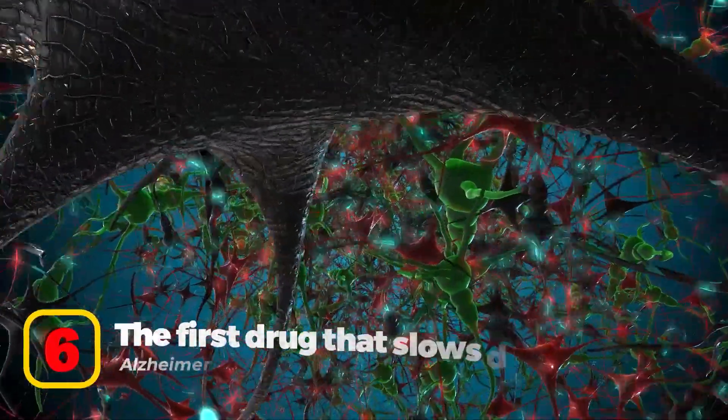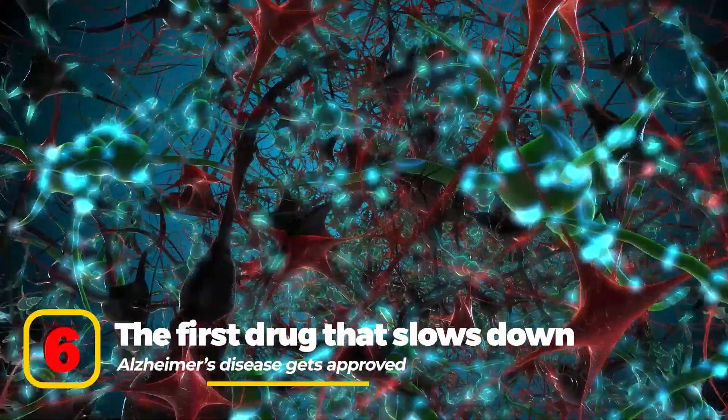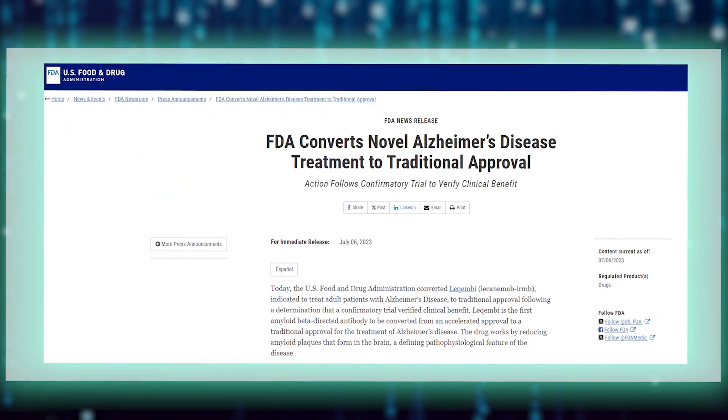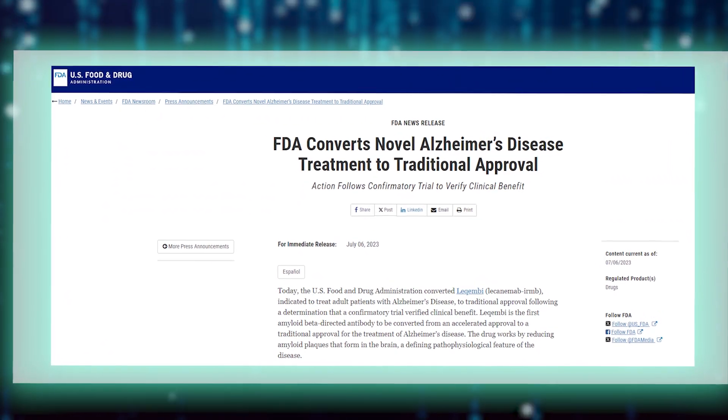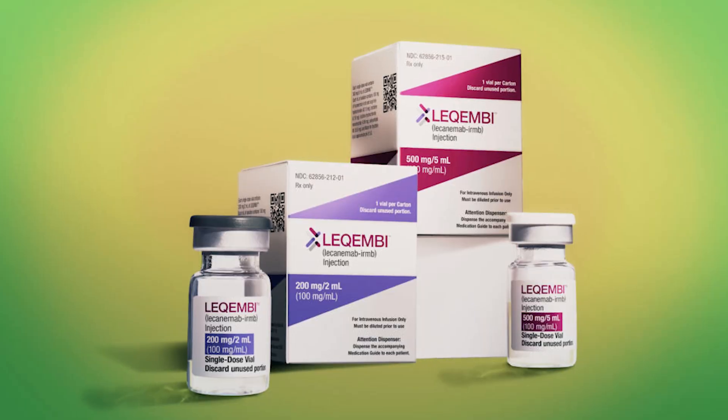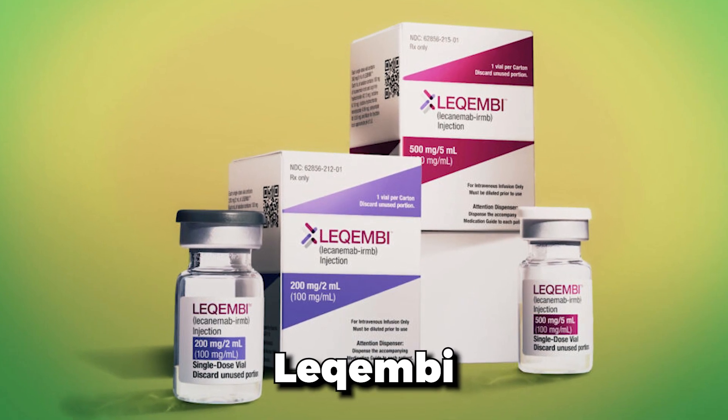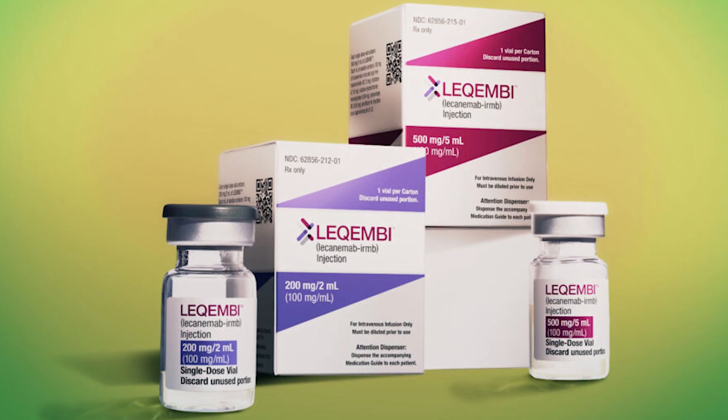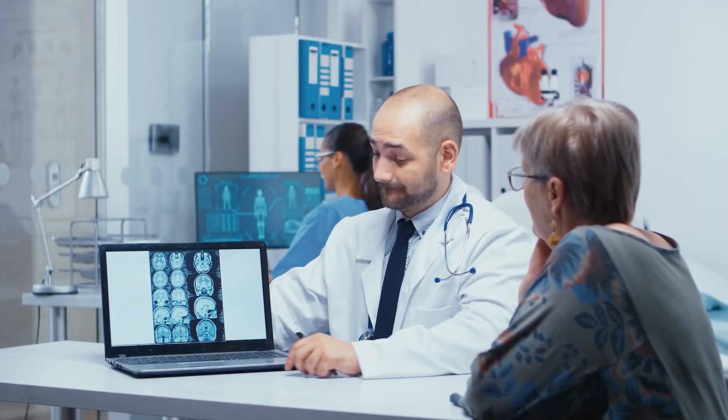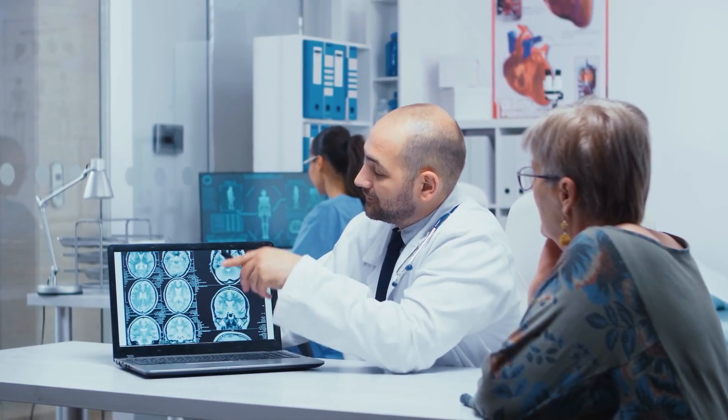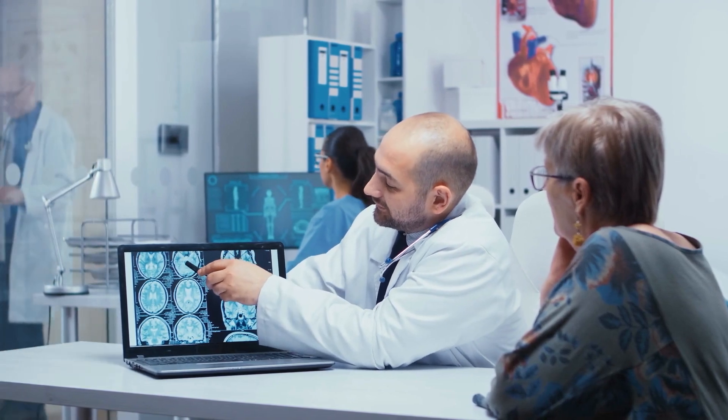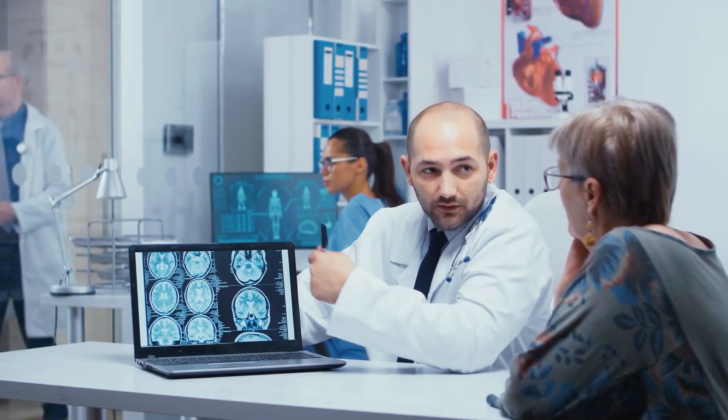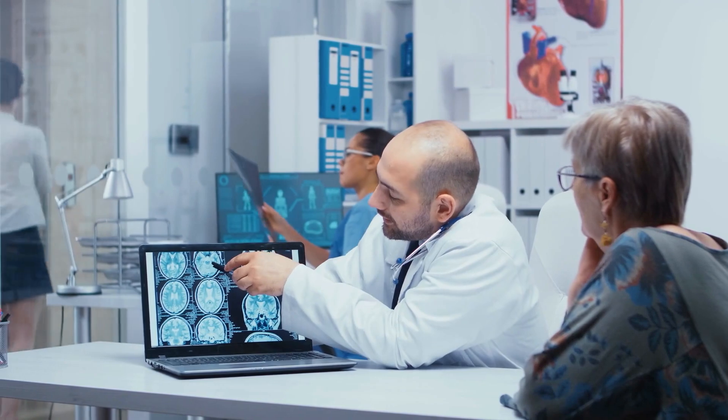Number 6: The first drug that slows down Alzheimer's disease gets approved. The US Food and Drug Administration approved the first drug for Alzheimer's that targets one underlying cause of the disease. While the drug, Leqembi, isn't a cure or improve symptoms in late-stage disease, after 18 months of treatment, it slows declines in memory and thinking by about 30% if the medicine is given in the early stages of Alzheimer's.